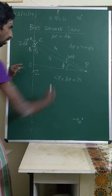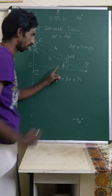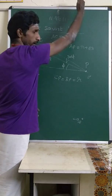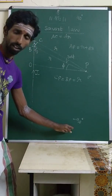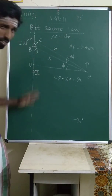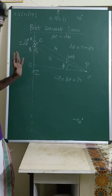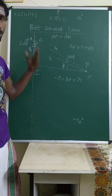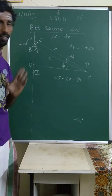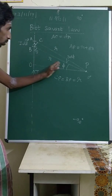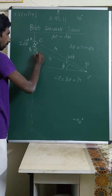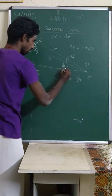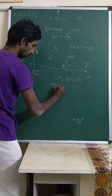Similarly downwards, the angle goes from 0 to minus 90 degrees. Both sides of the wire are infinite, so the limit of φ varies from minus 90 to plus 90 degrees, that is from minus π/2 to plus π/2. The distance OP is equal to r.